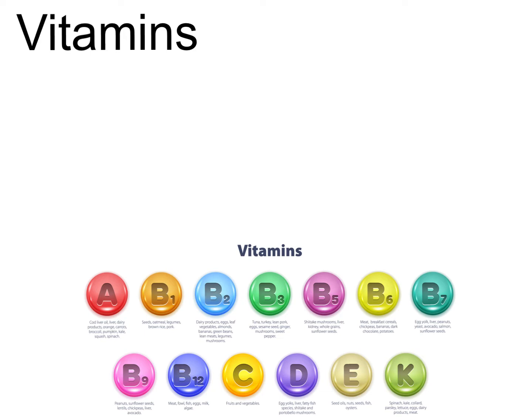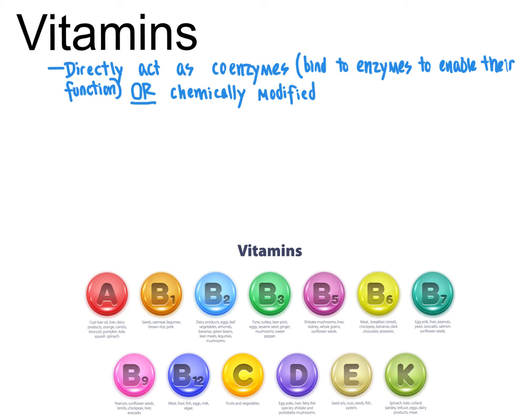The reason why they're required for normal health and normal growth is because vitamins are either directly used as coenzymes, organic molecules that enable the function of enzymes, or these vitamins are modified by chemical reactions in the body to ultimately become coenzymes. So it's that role of vitamins in enabling the function of enzymes that makes vitamins essential for good health. There are many examples that we could talk about here.